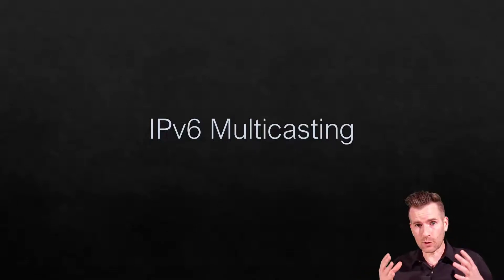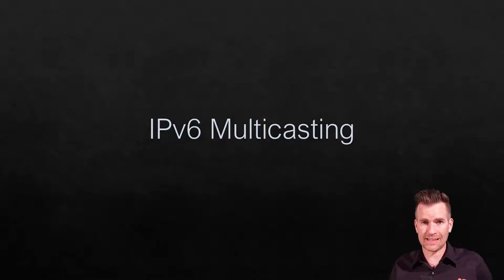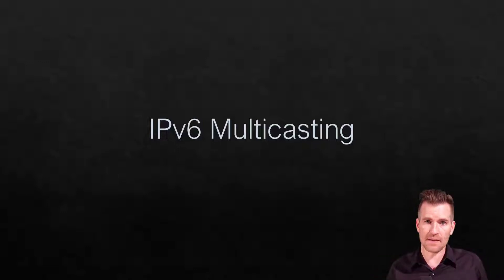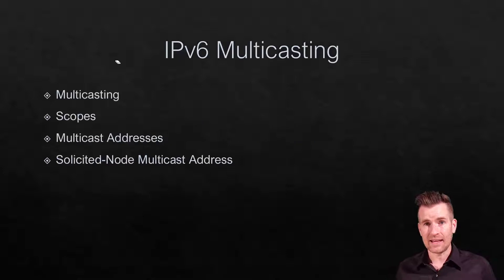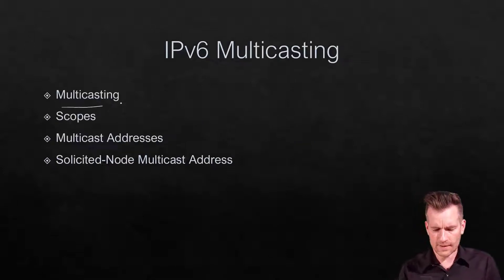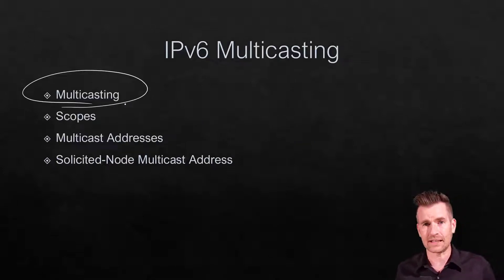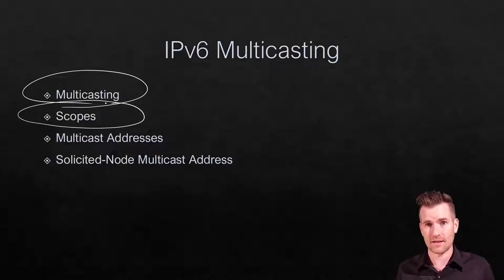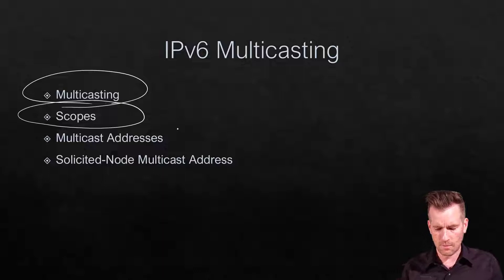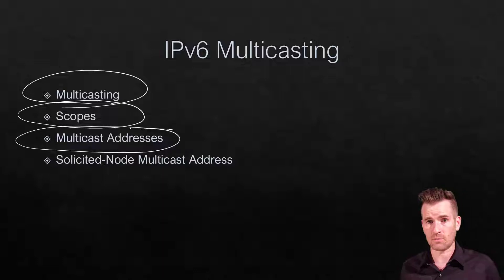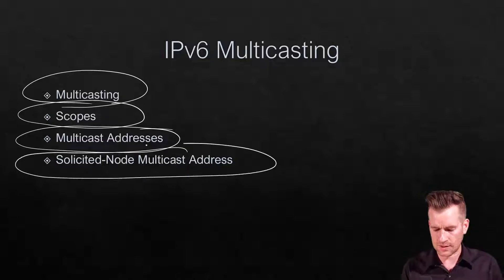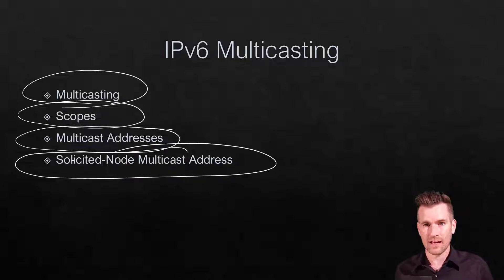Now it's time to take a deeper look into IPv6 multicasting. Multicasting is a very important part of how IPv6 operates and works. In this video, we're going to start out by talking about how multicasting works, then get into some IPv6 scopes, then some specific multicast addresses, and then we'll talk about the solicited node multicast address, a specific type of multicast address.